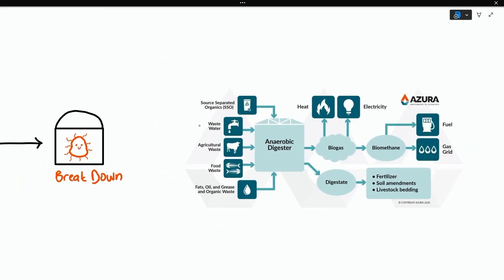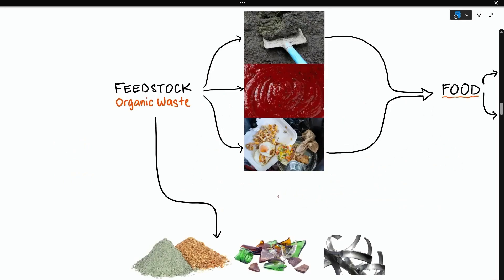Organic waste comes in many different forms and can be divided into a few categories. We've got source-separated organics or SSOs, wastewater, agricultural waste, food waste, fats, oils, and greases, or FOG. Those are just a few examples, but the important thing is that all feedstocks are at least a little bit biodegradable, which makes feedstocks a source of food for the bugs in the digester.